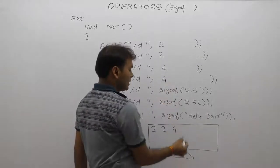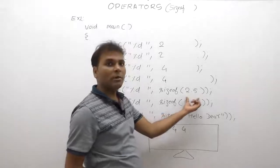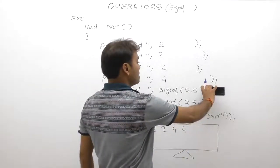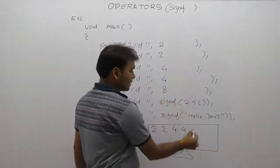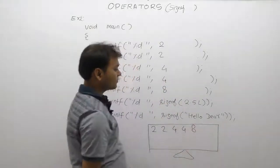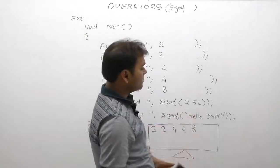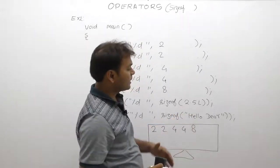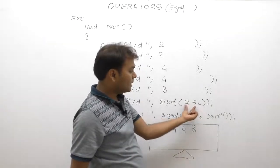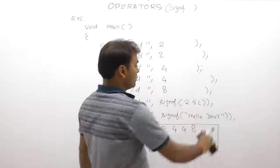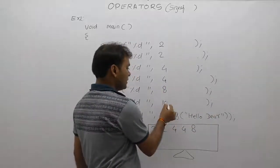Next, sizeof(2.5). The default type of 2.5 is double, and double takes eight bytes, so 8 is printed. Then sizeof(2.5L): the L suffix on a double makes it a long double, and long double takes ten bytes, so 10 is printed.